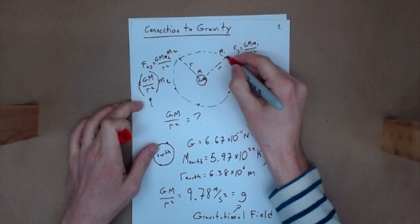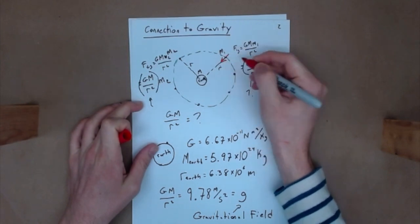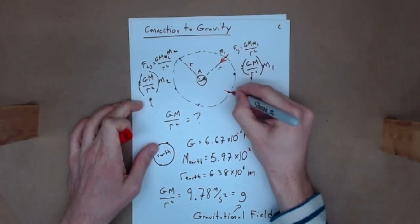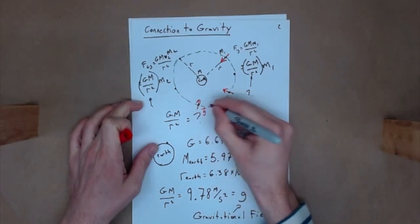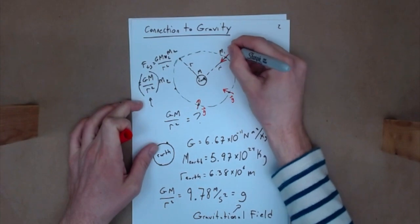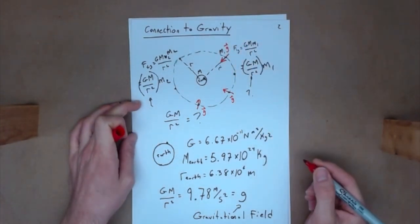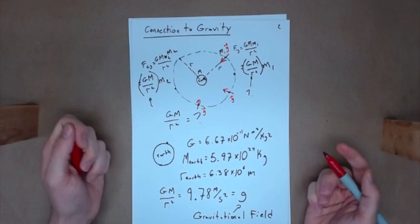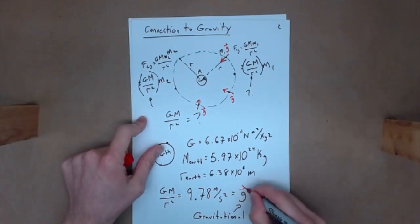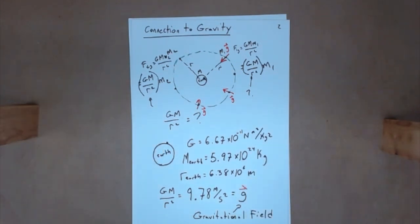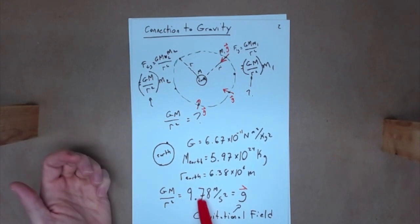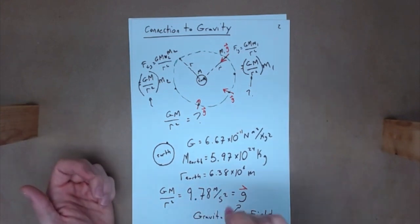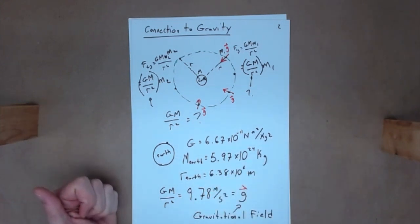The gravitational field at various positions points toward the Earth. I can draw these all as lowercase g vectors, because the acceleration due to gravity — what we traditionally call it — is in fact the gravitational field. It's a vector with both magnitude and direction. Here on the surface of the Earth, it is 9.78 m/s² directed downward toward the center of the Earth.